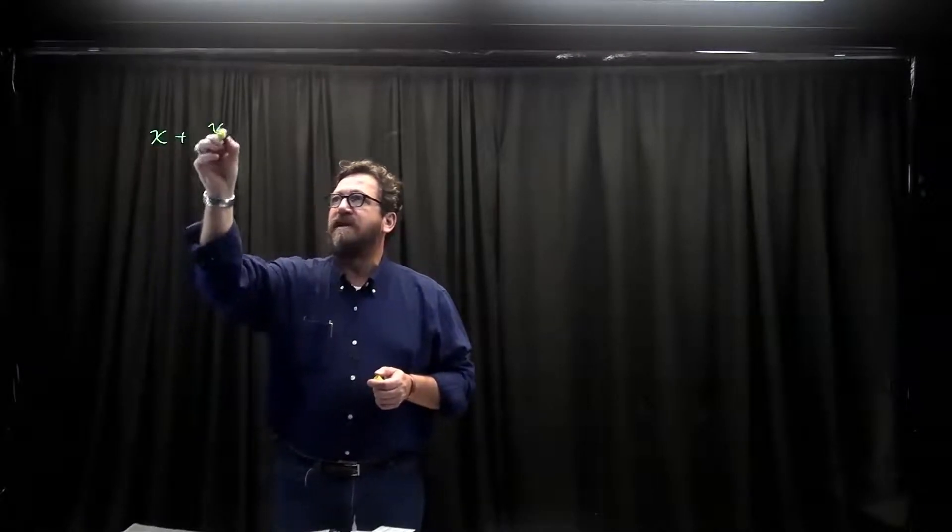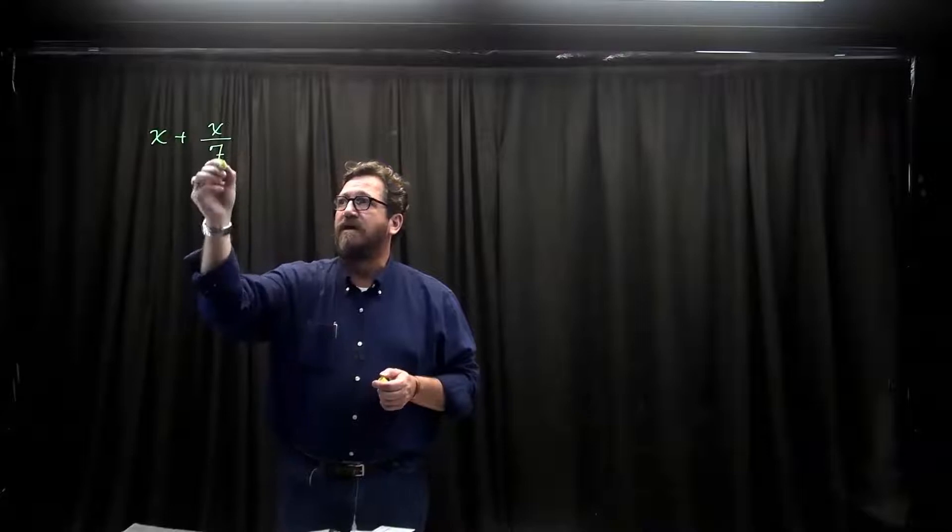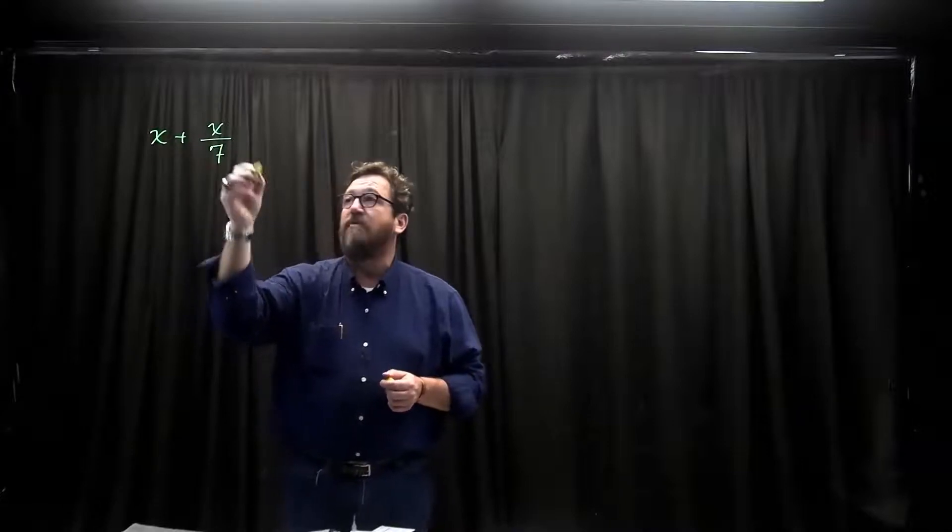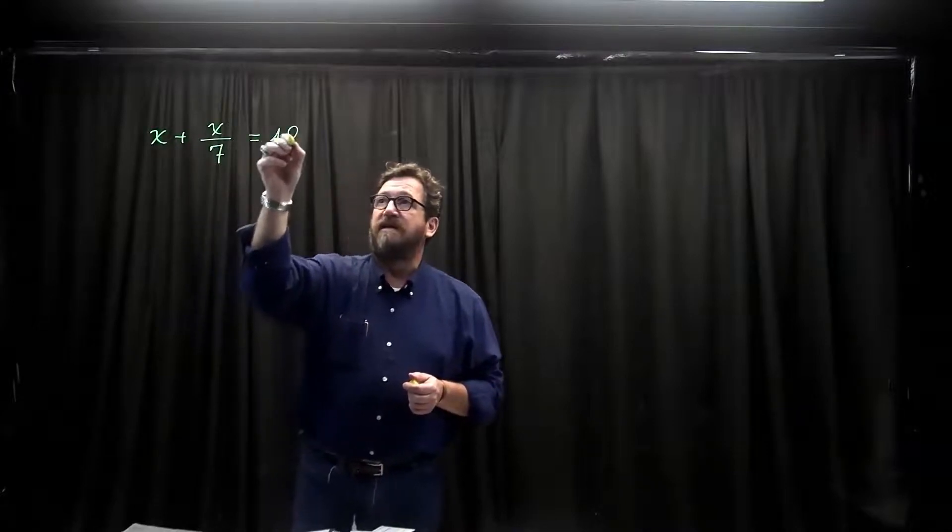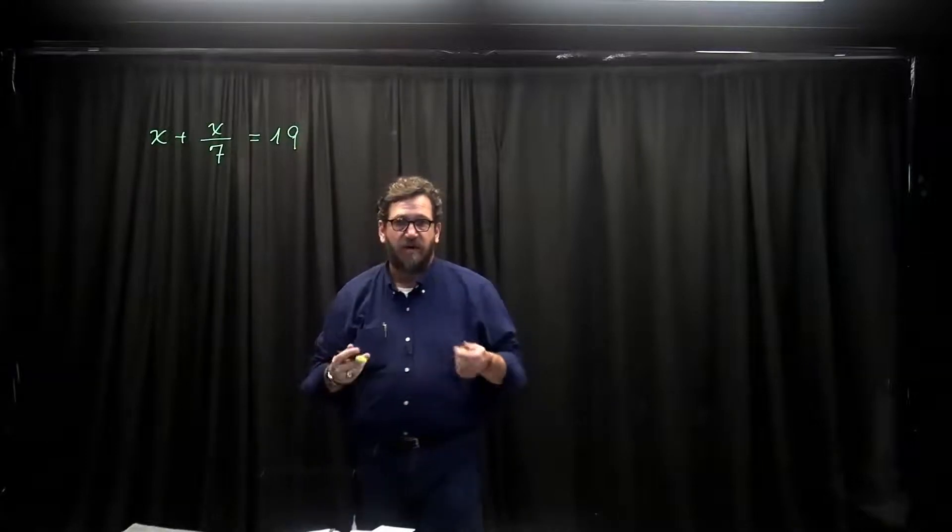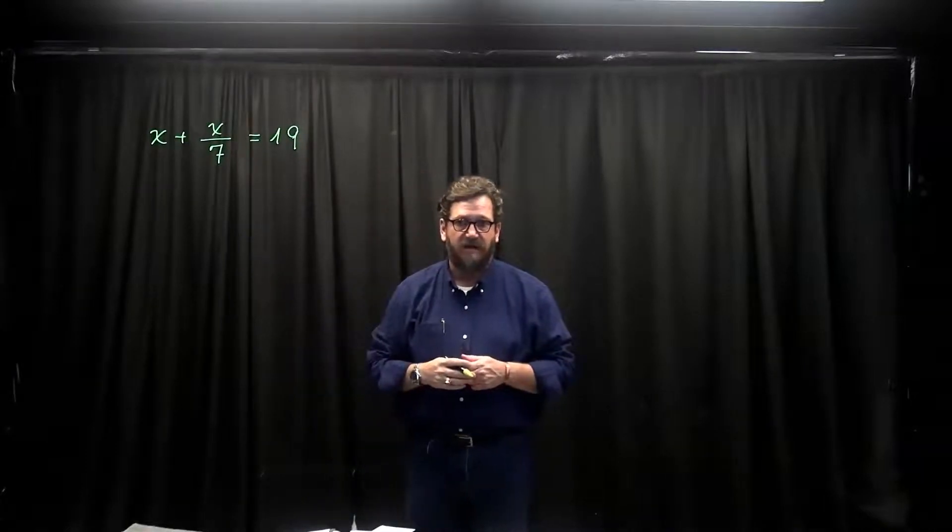One of the famous problems in the Rhind papyrus says that an amount and its seventh is 19. What is the amount? In modern language that says something we don't know added to a seventh of what we don't know is 19. And the question is how do you solve that equation?